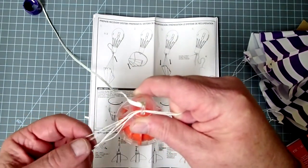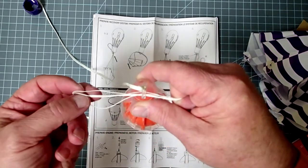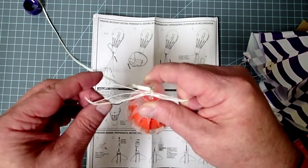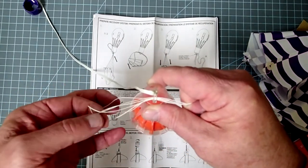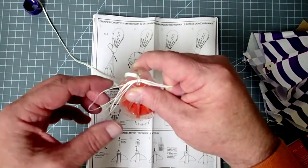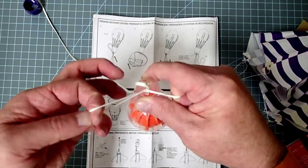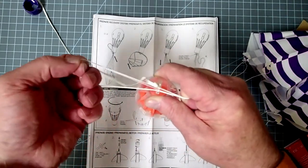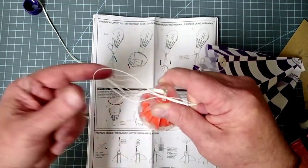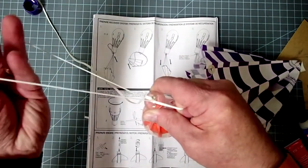And then that loop goes through the eye of the nose cone there. Okay, and then you have to make sure you get everything back in a loop again. And if you notice here, any time I change hands or change loops, I'm always holding on to some other part of the shroud lines so I don't change their lengths.